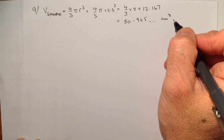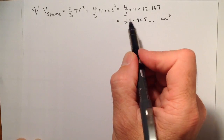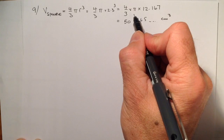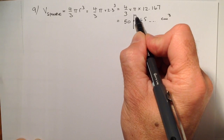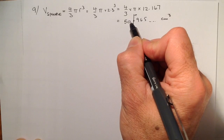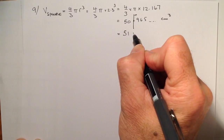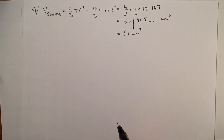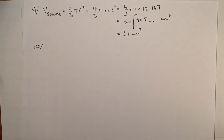I've been asked to round this number to two significant figures. The first significant figure is the 5, and I cut the number after the next digit. Looking to the right, that's a 9, so it rounds the 0 up to a 1, giving 51 centimetres cubed. And that's question 9 complete.